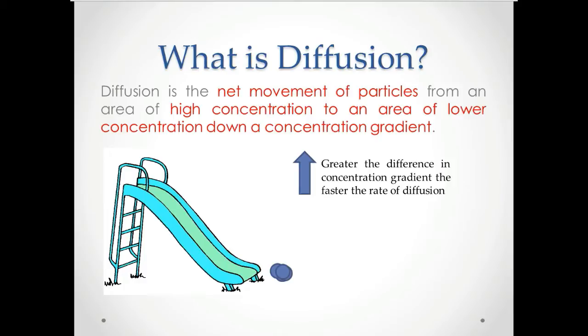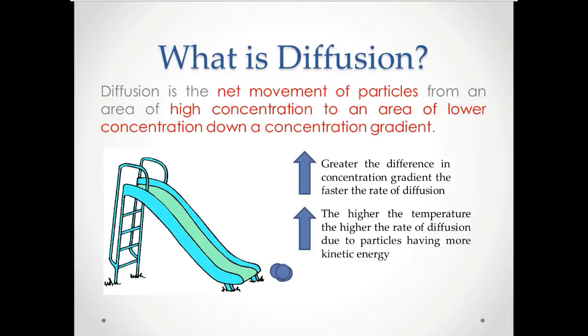Also imagine if these particles, instead of going normally, they push themselves on the slide. They will go faster, and this is the same for diffusion as well. If the particles have more energy, they will move down the slide faster. And this energy is usually gained by increasing the temperature. So therefore, increasing the temperature increases the rate of diffusion because the particles have now gained more kinetic energy.